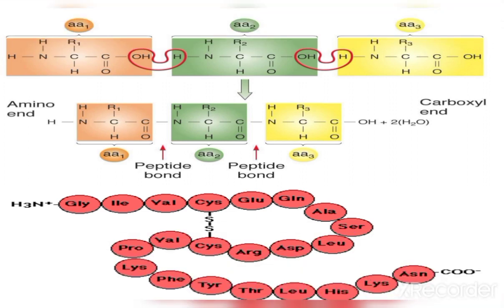In this way, different amino acids join together and form a large chain structure called a peptide, and if it becomes more complex, we call it a protein.